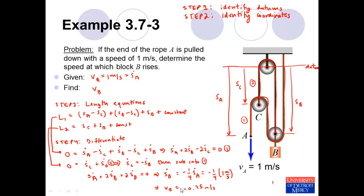A negative value for SB-dot means this length is getting shorter, so block B is moving upward. Therefore, VB equals 0.25 meters per second upward. This matches the intuition we had at the beginning: a movement of point A downward causes point B to move up, and the movement of point B upward is smaller because the distance point A moves has to be spread out across the other lengths of rope. That brings this example to a conclusion.